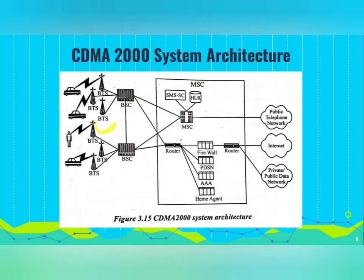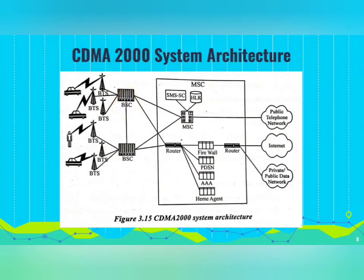The Base Transceiver Station, or BTS, is responsible for allocating resources — both power and Walsh codes — for consumption by subscribers. The Base Station Controller, or BSC, is responsible for controlling all BTS units under its domain. The BSC routes packets to and from the BTS to the PDSN, routes time division multiplexing traffic to the circuit switched platforms, and routes packet data to the PDSN.